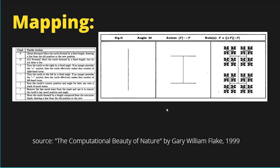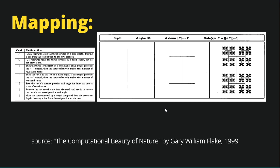According to 'The Computational Beauty of Nature' by Gary William Flake from 1999, the idea is that we map our letters — our output word from our L-system — into some actions that our agent drawing the representational image will perform. In the table on the left, we can see that F stands for draw forward, G for simply going forward, plus and minus for rotating, square brackets for saving and reloading position, and a straight line for moving the agent forward.